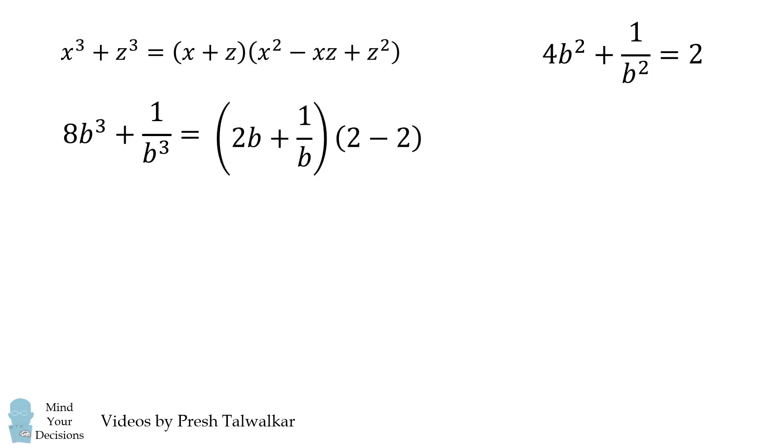This then simplifies to be 2 minus 2 which is equal to 0. And then 0 times anything is equal to 0.